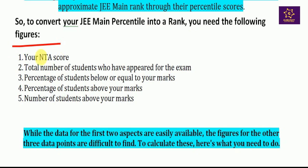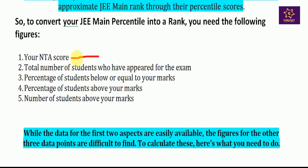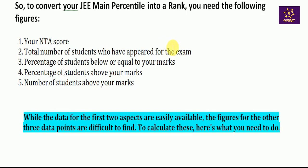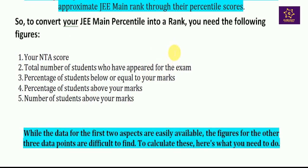To convert your JEE Main percentile into your rank, you need to follow these steps. First, your NTA score — you need to have the score from the exam, for example the February session result. Second, the total number of students who appeared for the exam in that particular session. Third, the percentage of students below or equal to your marks.